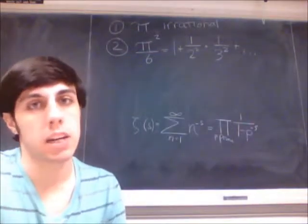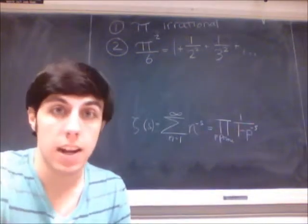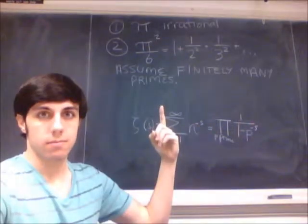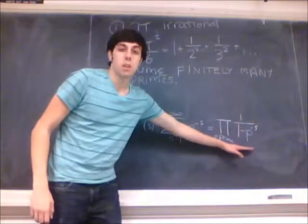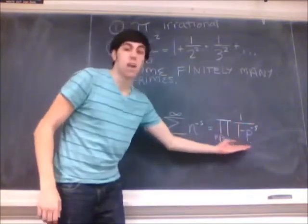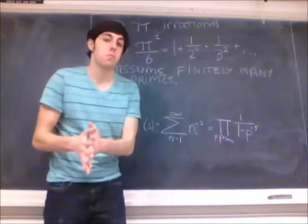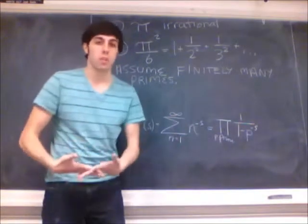Now I want to proceed by proof by contradiction, so let's pretend that there are only finitely many primes. Well, if there are only finitely many primes, then we know that this product here is a rational number. Because each one of these is just a fraction, so if we multiply a finite number of fractions together, we're going to get another rational number.